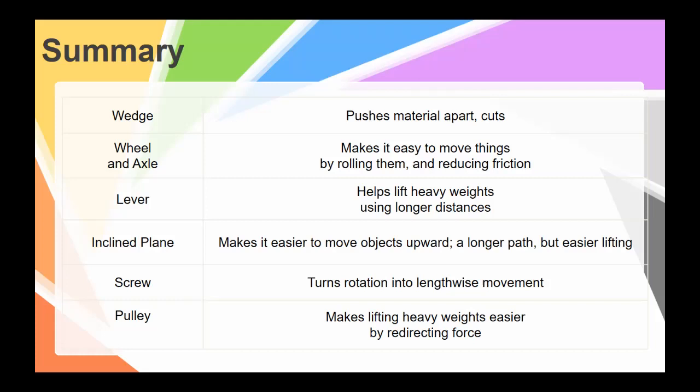Then we have the inclined plane, which makes it easier to move objects upward. We use a longer path, but then it's going to have easier lifting, less force required. We have a screw, which turns rotation into lengthwise movement. And we have the pulley, which makes lifting heavy weights easier by redirecting the force so we can get an assist from gravity.